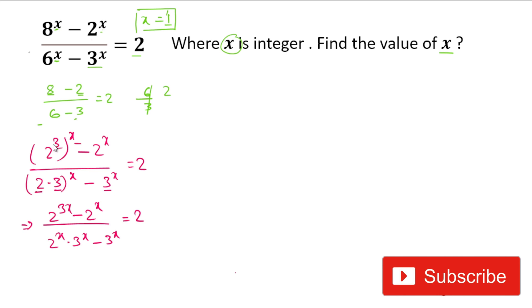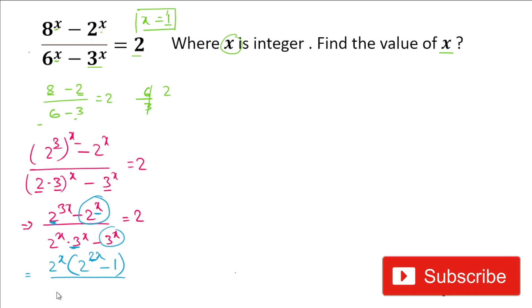From the numerator, we take 2^x as a common factor, leaving 2^(2x) - 1. From the denominator, we take 3^x as a common factor, leaving 2^x - 1. So the expression becomes 2^x(2^(2x) - 1) / [3^x(2^x - 1)] = 2.